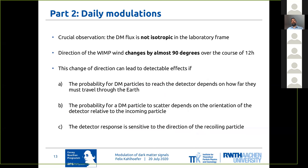There are essentially three different ways of how this change in direction can lead to detectable effects. The first one is if in some way the probability for dark matter particles to reach the detector depends on how far dark matter has to travel through the Earth to reach the detector. The second possibility is that the scattering probability itself depends on the orientation of the detector relative to the incoming particle, so that the scattering rate becomes a function of the detector orientation.